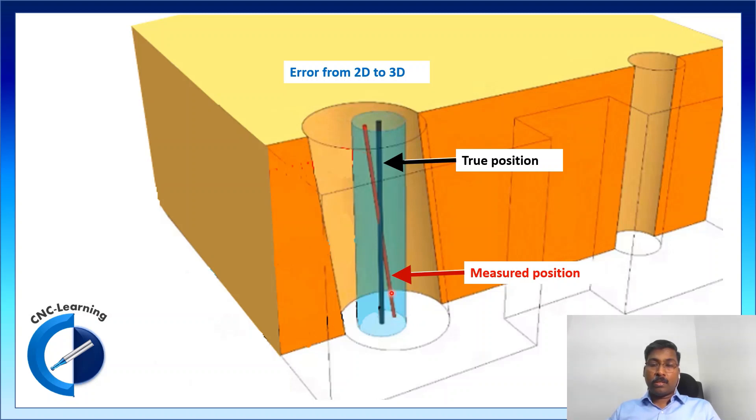And this is the measured position. So, you can note that there is an angle. There is an error in the perpendicularity for this hole. So, the position of this circle and position of this circle will vary. And this diameter of this cylinder, this green cylinder, that shows the position tolerance.